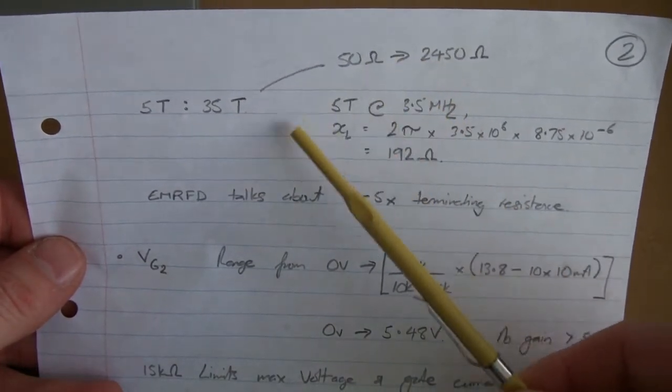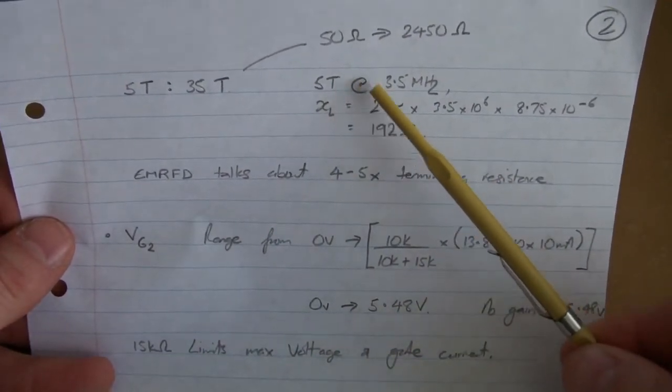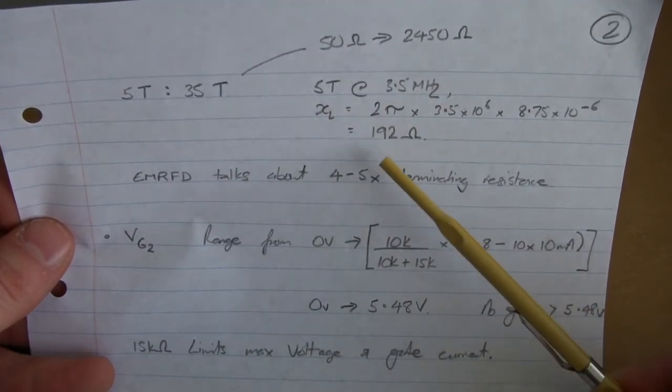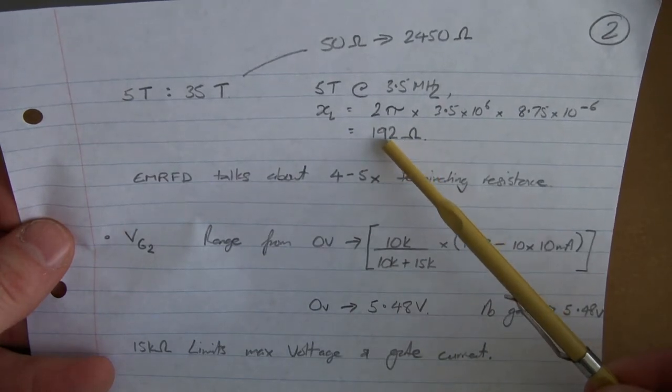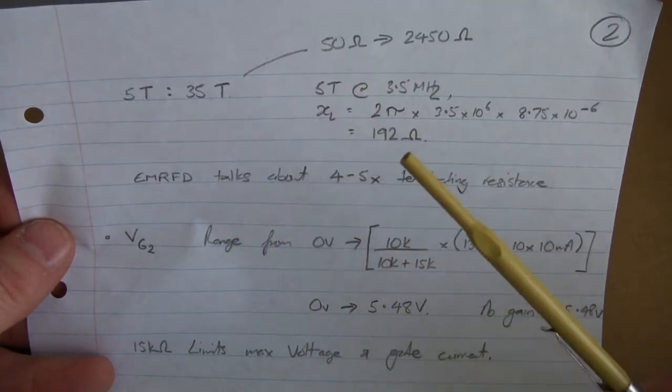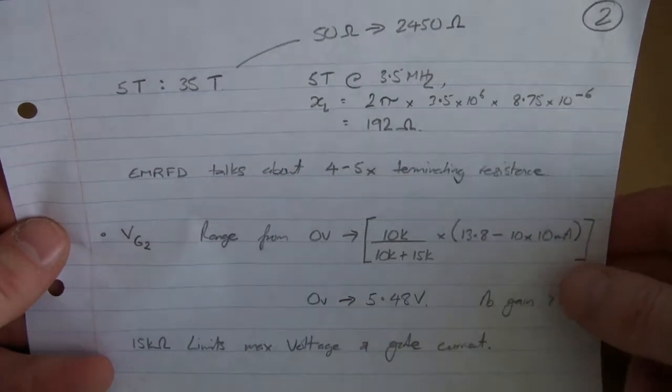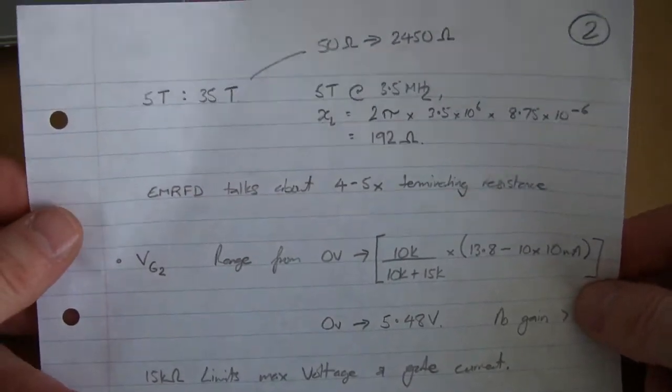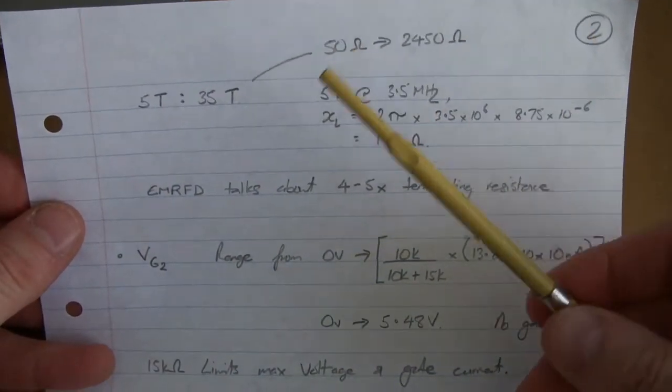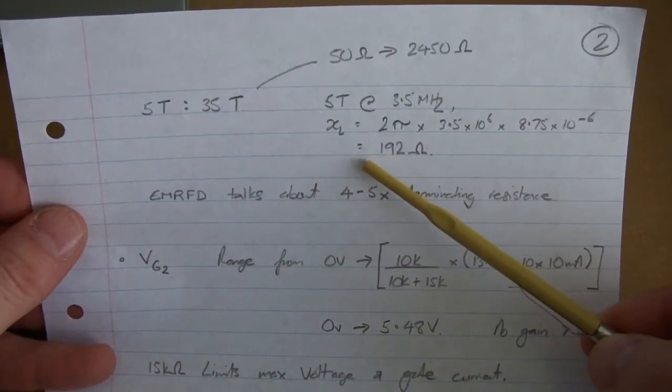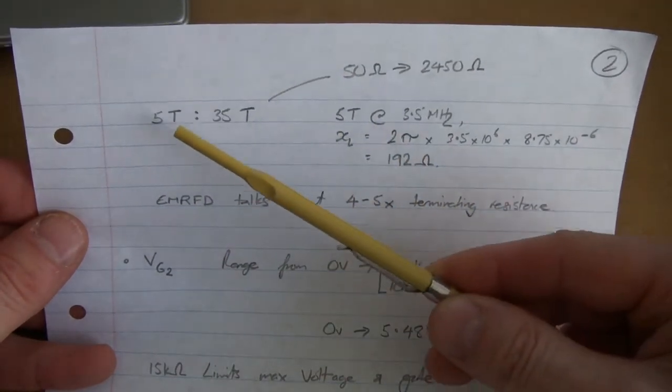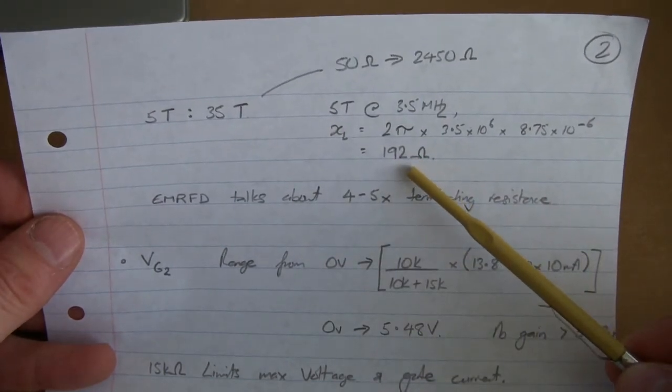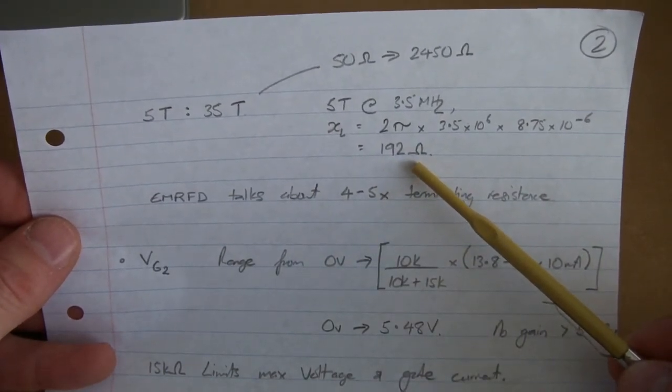And then just our rule of thumb here, at 5 turns at 3.5 megahertz, which is our lowest frequency, we have an inductive reactance of 192 ohms, which is roughly 4 times our 50. Interestingly enough, that same textbook in one breath says that practical transformers should be 5 times greater, or the inductive reactance should be 5 times greater than the terminating resistance, and then later on in the book it talks about 4 to 5 times.